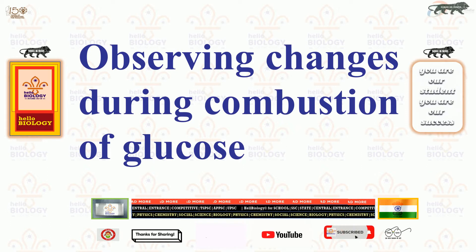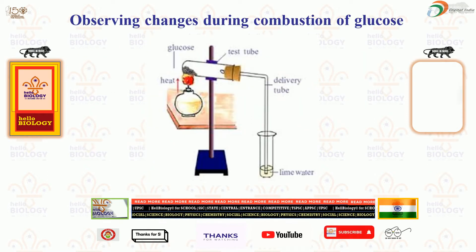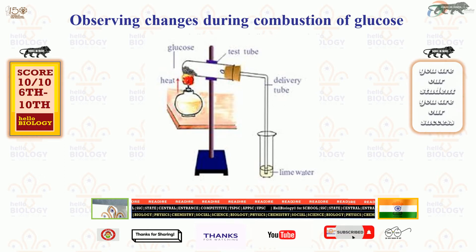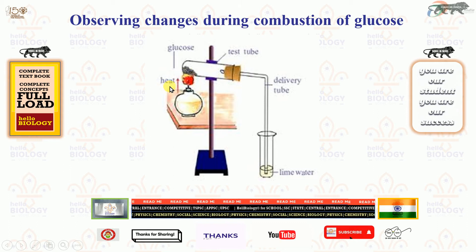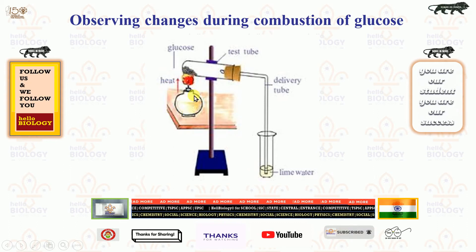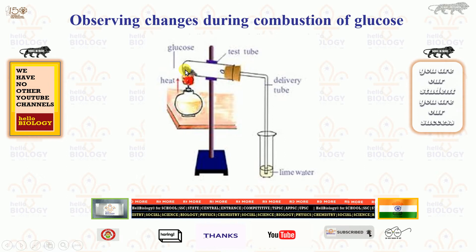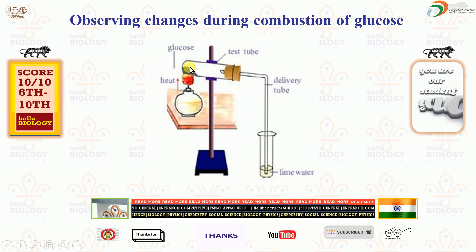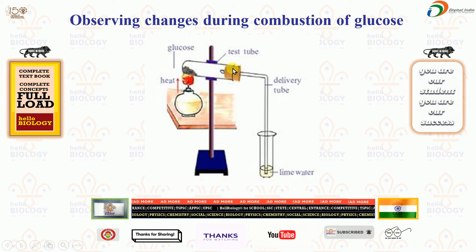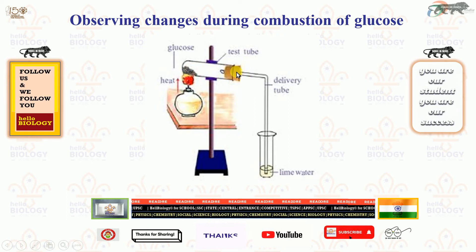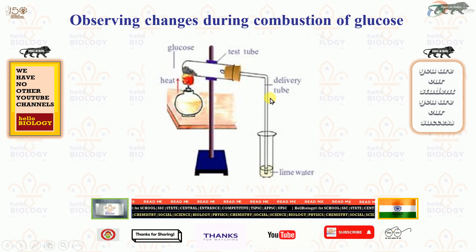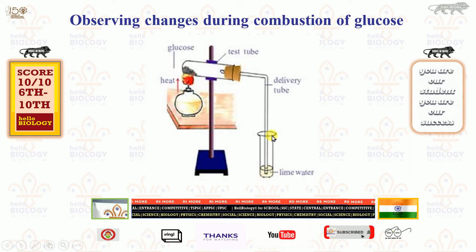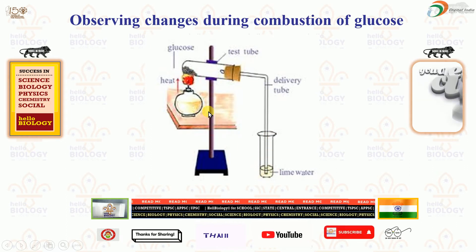Let us see this experiment — first we will look at the diagram. The parts are: heat from a spirit lamp, and glucose (normal sugar) is filled in the test tube. The test tube has a one-hole rubber cork inserted with a delivery tube, such that it dips into lime water contained in another test tube. There is also a stand.